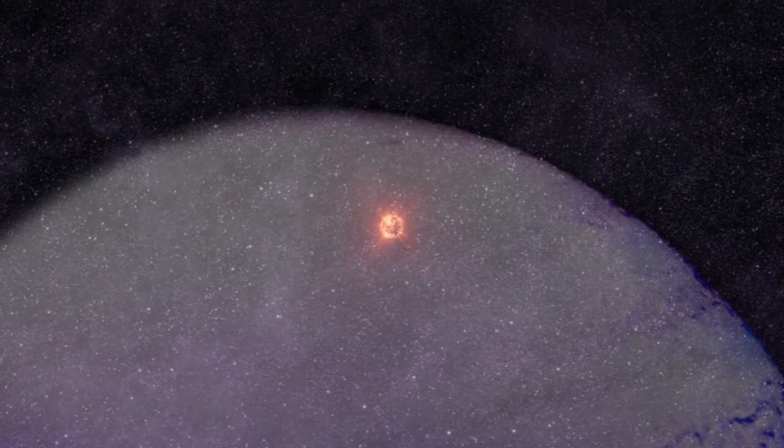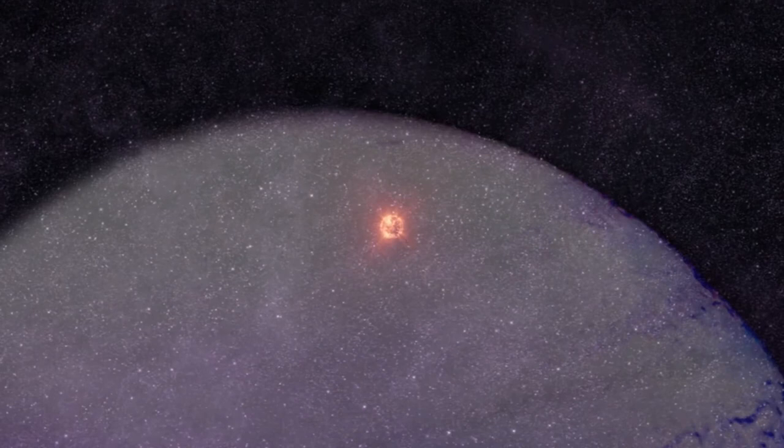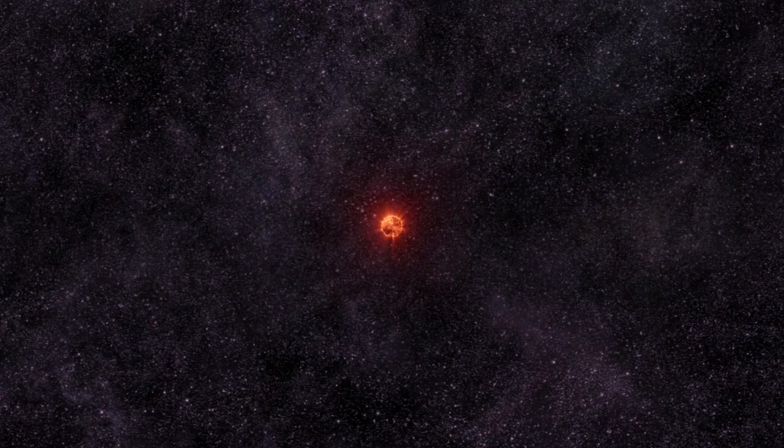Aldebaran is a red giant star in the locality of our solar system. It forms part of the beautiful winter hexagon, and is in many ways a snapshot of the future of our own solar system.